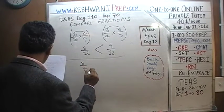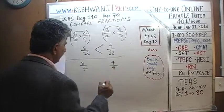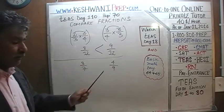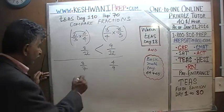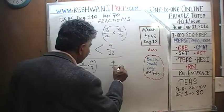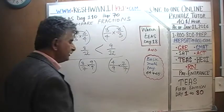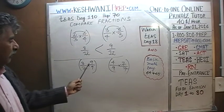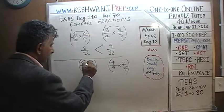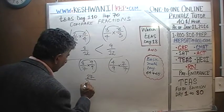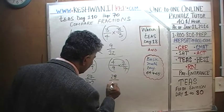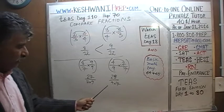Let's do one more: three-sevenths versus four-ninths. The least common multiple is seven times nine, which is sixty-three. Multiply the first fraction by nine over nine and the second fraction by seven over seven — we're not changing any value because nine over nine and seven over seven both equal one. We get twenty-seven over sixty-three versus twenty-eight over sixty-three.